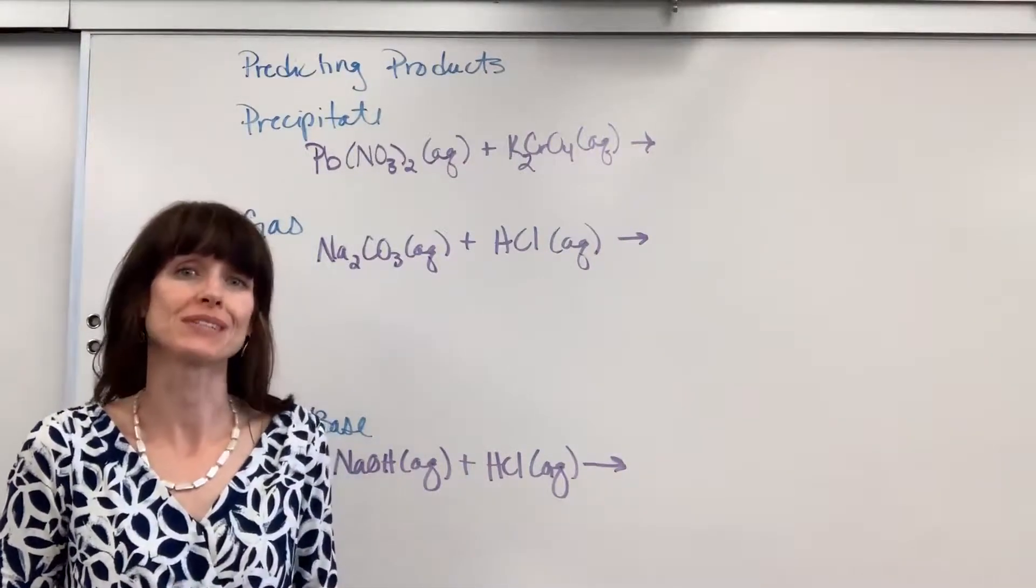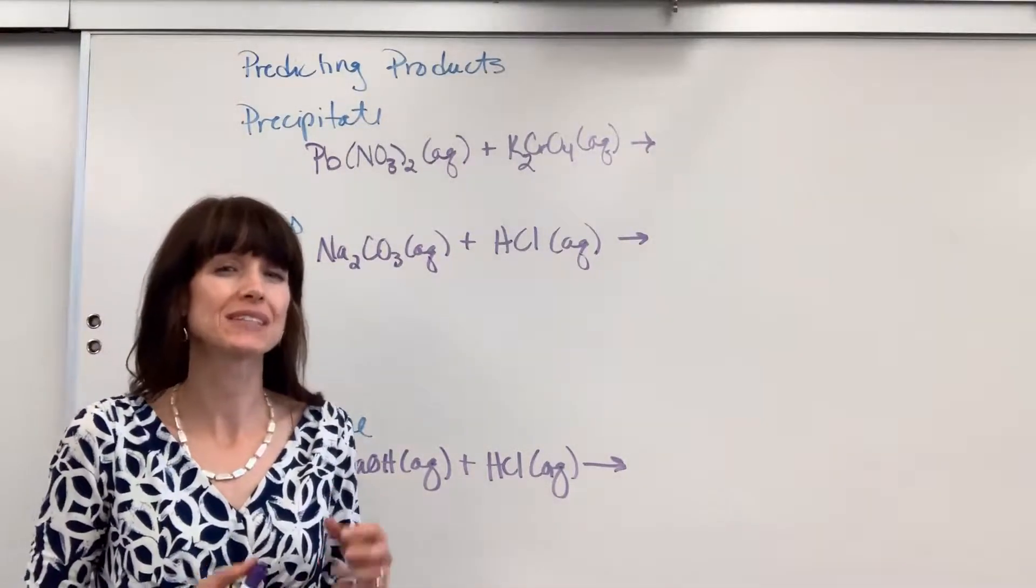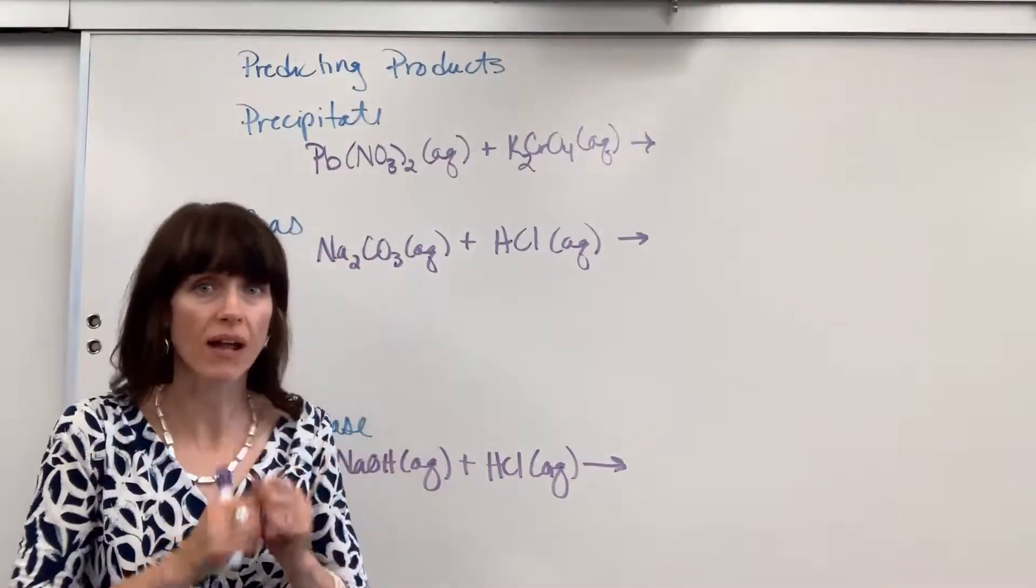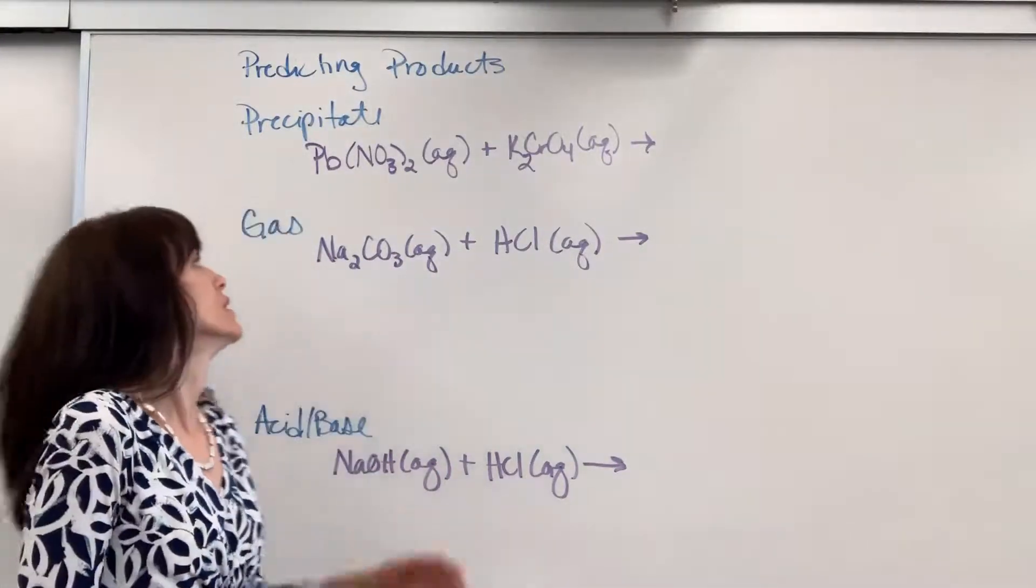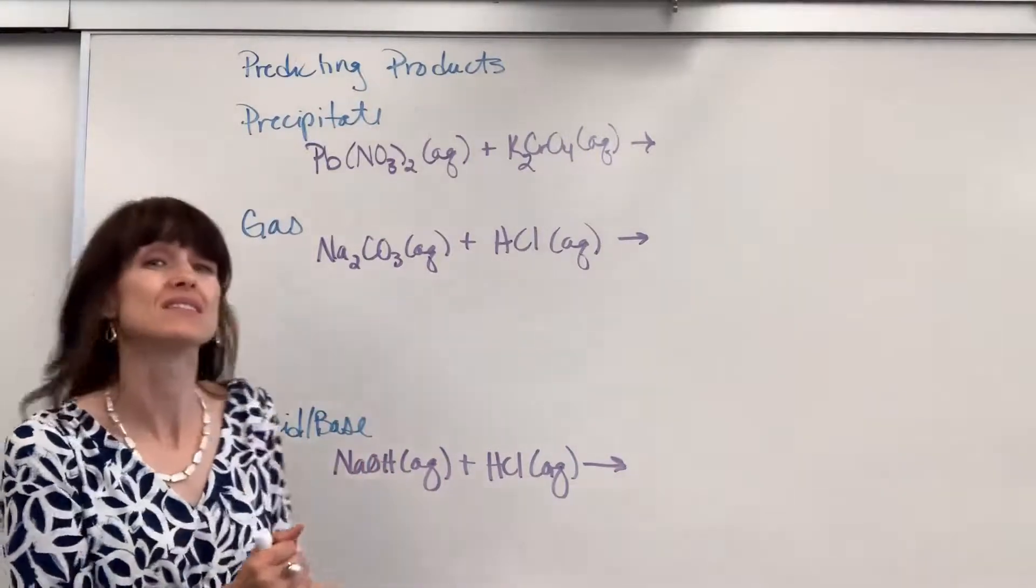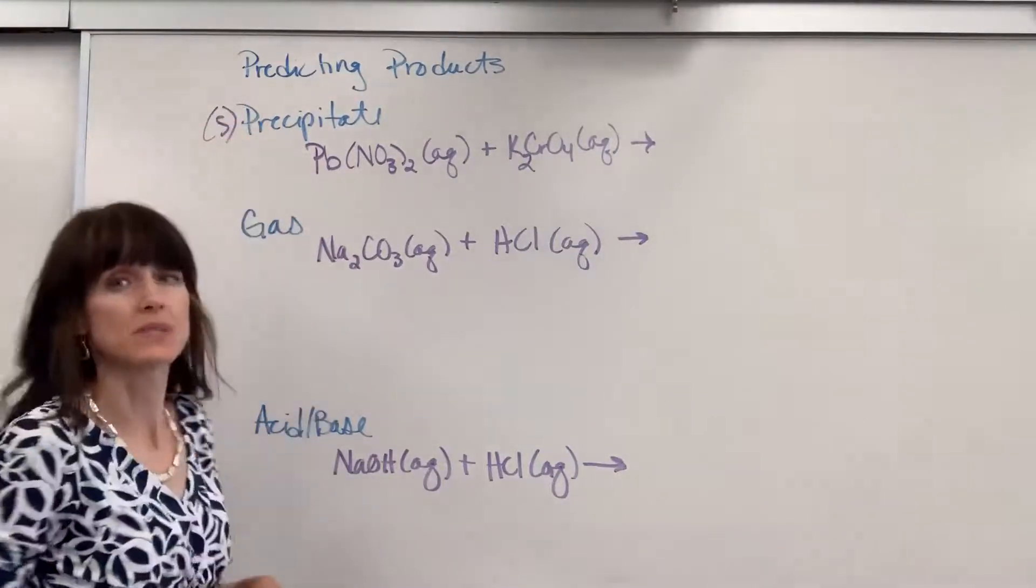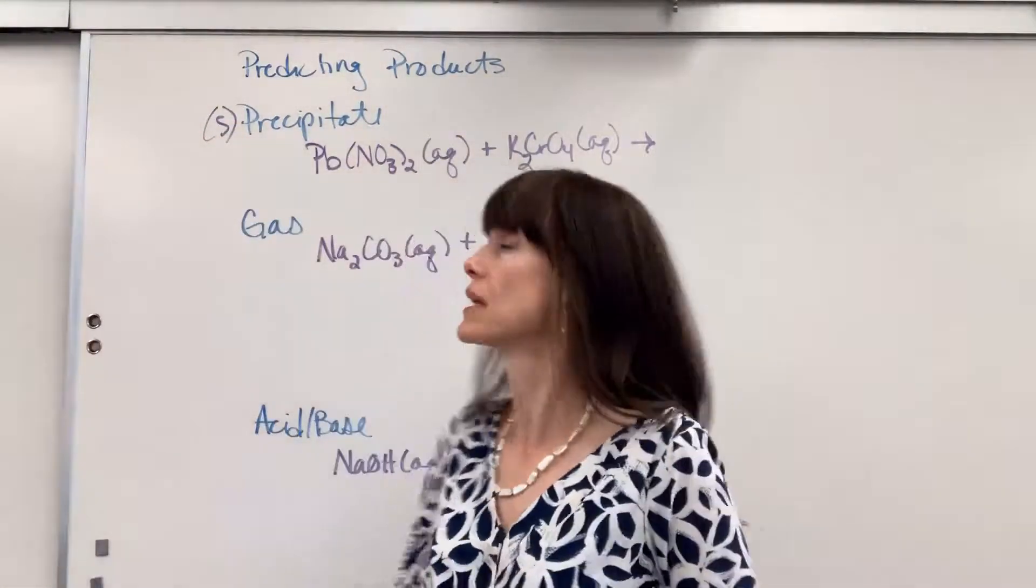We are going to do some practice with predicting products and different types of reactions. I'm going to give you the spoiler on this right out of the gate. Here's the deal. If you have a solid as one of your products, you're going to say that this is a precipitate reaction when you do the double replacement.